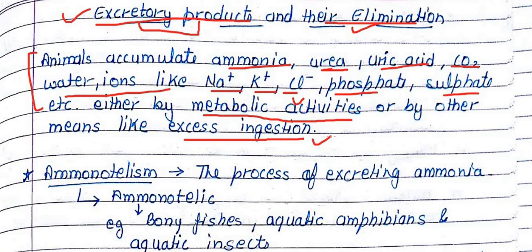That is why our body has a system. When we talk about ammonotelism, in this process ammonia is excreted. The organisms that do this are called ammonotelic organisms — for example, bony fish, aquatic amphibians, and aquatic insects.